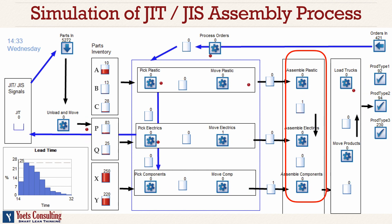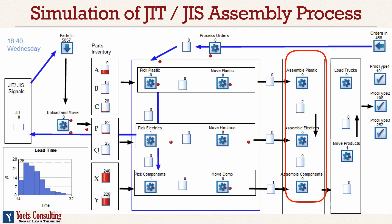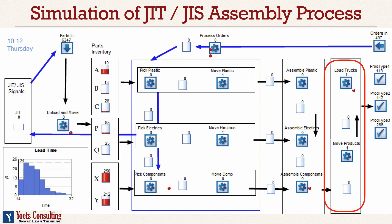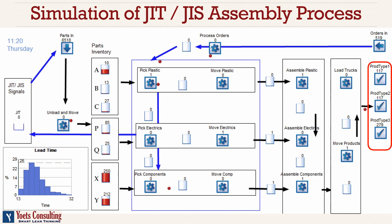The pick activities then move the parts to the relevant places in the assembly process. You can see the assembly process first assembles the plastic, then the electrics and the components from the top down. The black arrows show the material flow, while the blue arrows show the information flow. After assembly, the final products are moved and loaded into trucks, which then go to the final destination.